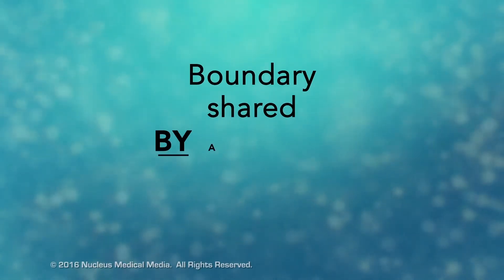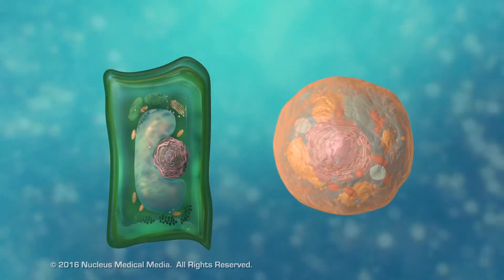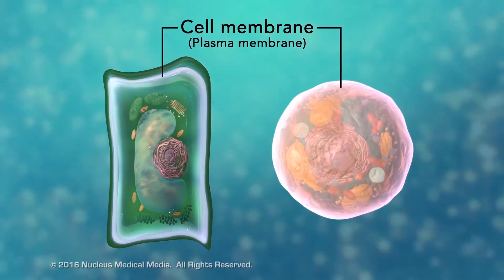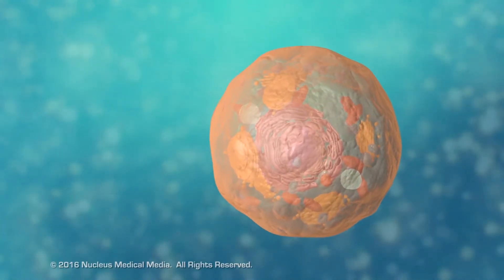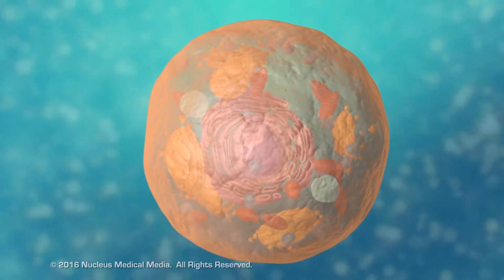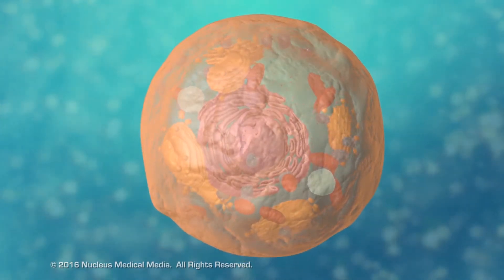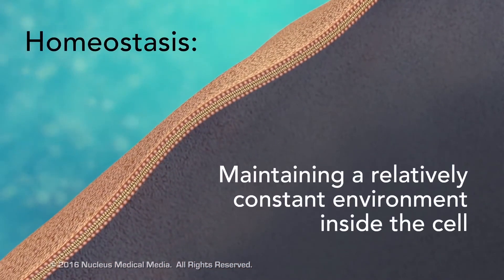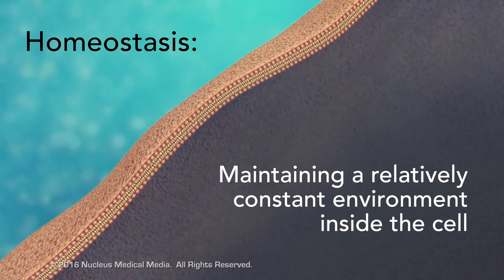So what is the boundary that all cells have? Whether they have a cell wall or not, all cells have a cell membrane, also called a plasma membrane. In a typical animal cell, the cell membrane is a thin, flexible barrier against the outside environment. Its main job is to help with homeostasis, a type of equilibrium in which the cell maintains a relatively constant, stable internal environment.